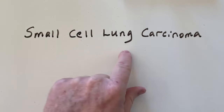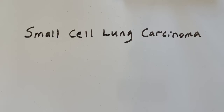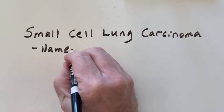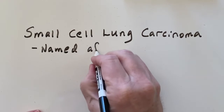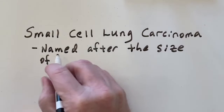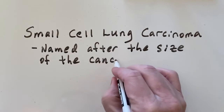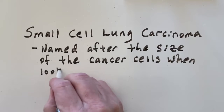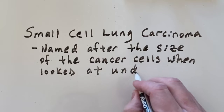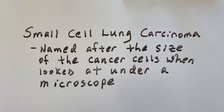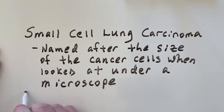In this video we're going to be talking about small cell lung carcinoma. It's named after the size of the cancer cells when you look at them under a microscope — so obviously they're going to be small cells. These are going to usually start in the bronchi.